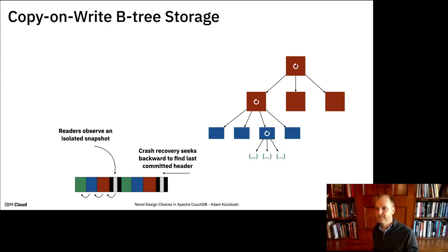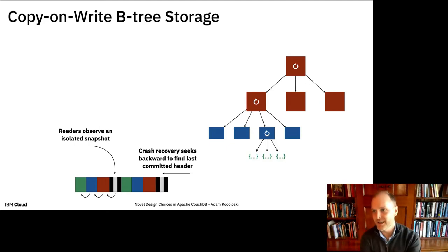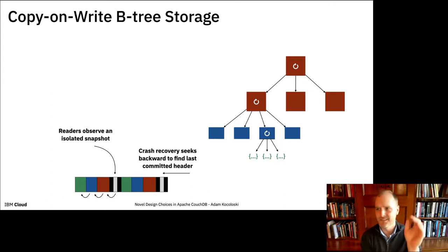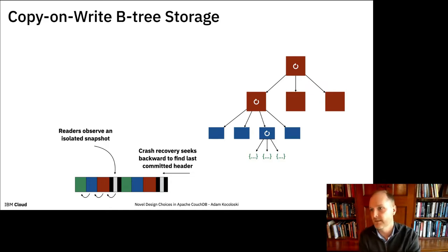For us, there isn't a notion of a database that contains multiple tables. A database is a lightweight construct in Apache CouchDB — you could treat it as more analogous to a table, except there's no cross-database querying. Users create a database and duck-type things: documents will have different types and you can create views that correspond to different tables of your data. We have systems where you could have a hundred thousand databases in a single instance of the server.